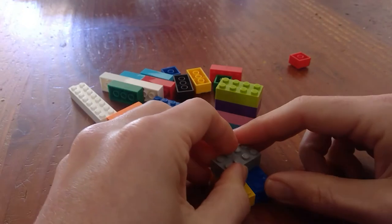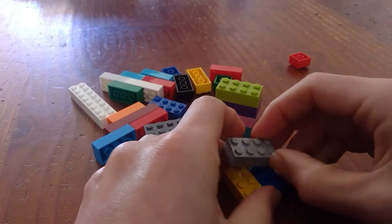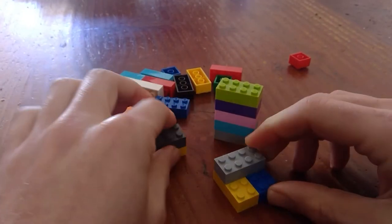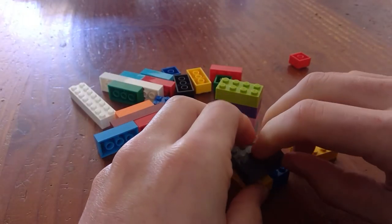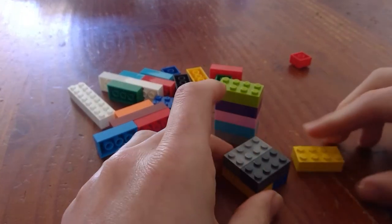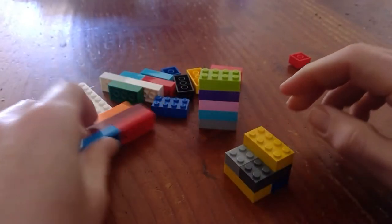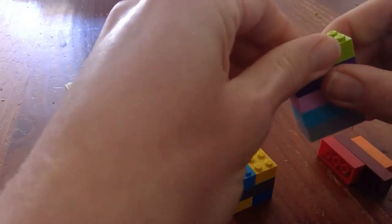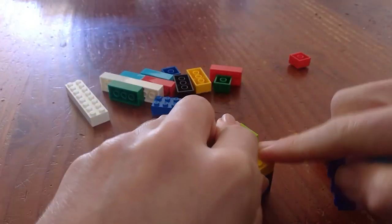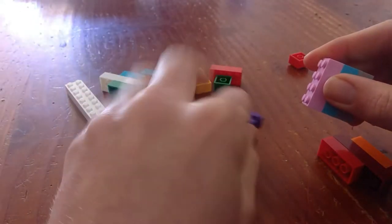So put two side by side this way and then we go in the opposite direction when we go up a level. And then we turn them again. And we turn them again. And we keep going like that as we build our tower.